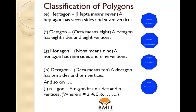An n-gon has n sides and n vertices, where n is equal to 3, 4, 5, 6, etc.